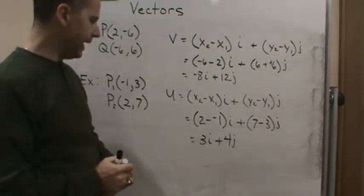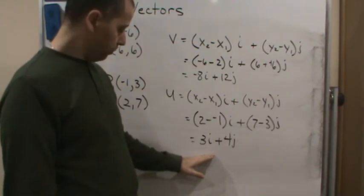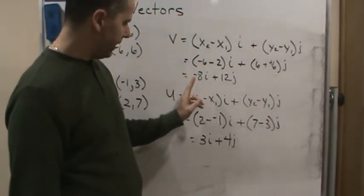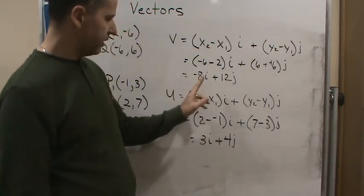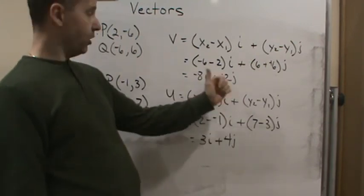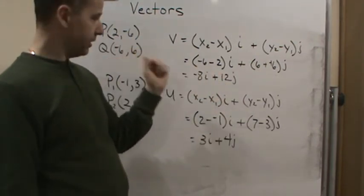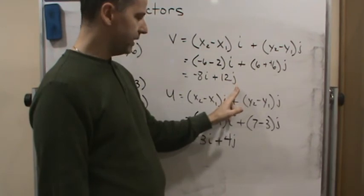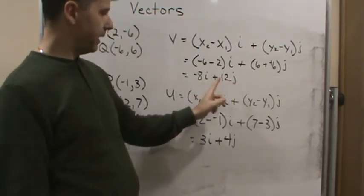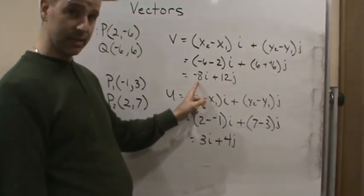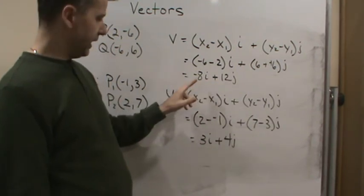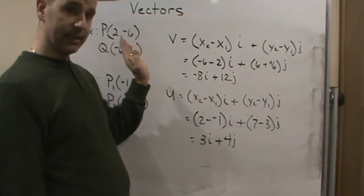And so now I can easily plot these, right? Because what does this tell me? This is telling me that I'm going negative 8 units in the i direction, which means in the horizontal direction. So that means I'm going 8 units to the left. This is telling me 12 units in the j direction, which is up and down. So this is going to be up. So this is telling me that my vector ends in the, as far as standard position, starts at the origin and ends in the second quadrant.